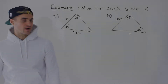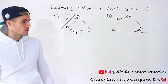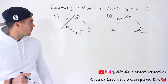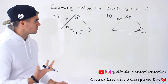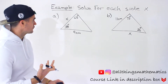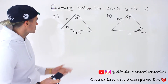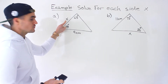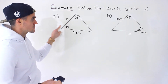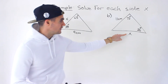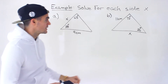Welcome back everyone. Patrick here, moving on to another video dealing with trig. What we have to do is take each of these triangles here — there are two of them — and we have to solve for each side x. Notice that we have this x value, that's the variable, the length of that side we have to solve for. And then we have an x over here, the length of this side.